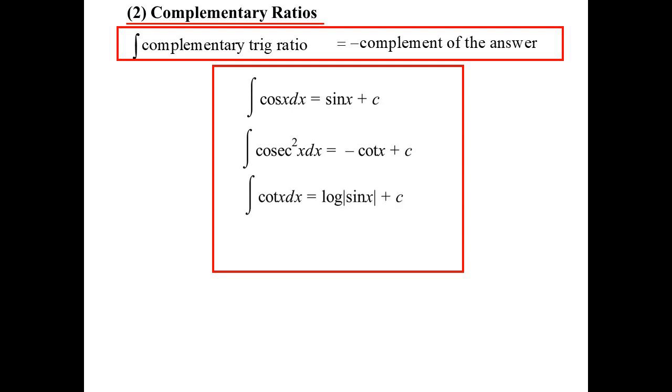Integrate cot, well when we integrate tan, we get minus the log of cos. So therefore when we integrate cot, the minus will now become plus, because we get minus, and the trig ratio changes to the complement, so we get the log of sine.